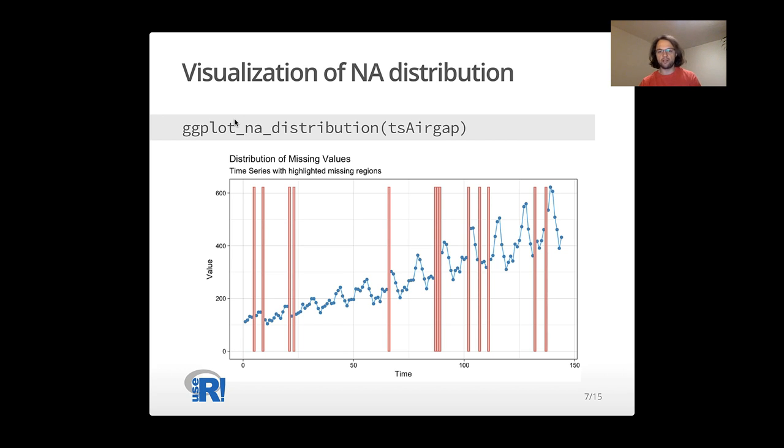As you can see in this plot, areas with missing values are highlighted in red. And you can perfectly see where they are located in the series. This gives you a nice first overview.